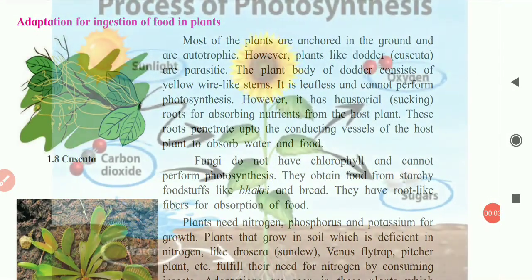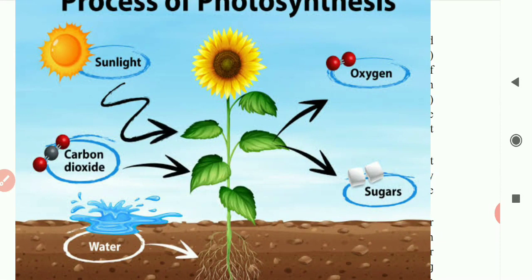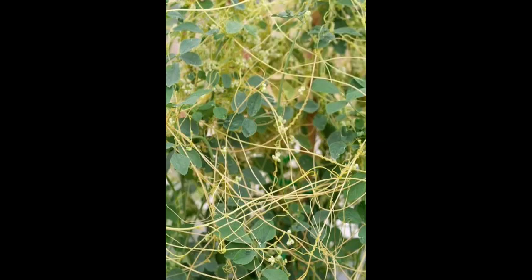Next is the adaptation for ingestion of food in plants. Most plants are autotrophs, meaning they make their own food by photosynthesis using sunlight, carbon dioxide, chlorophyll, and water. But there are also some parasitic plants. The plant shown is a dodder plant, also called Cuscuta. This plant is a parasite — it grows on the body of another plant and absorbs nutrition from it with the help of haustorial roots.